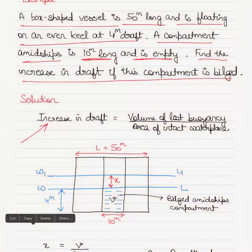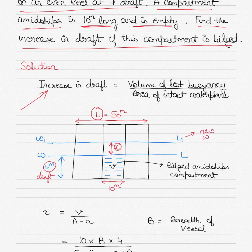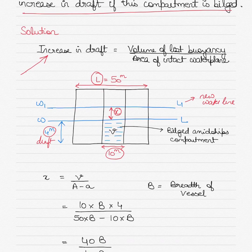From the diagram, the vessel is 50 meters long with an initial water level at 4 meters draft. The increase in water level is denoted X, giving new waterline W1L1. The midship compartment is 10 meters long. V denotes the volume of lost buoyancy in the bilged midship compartment. B denotes the breadth of the vessel.